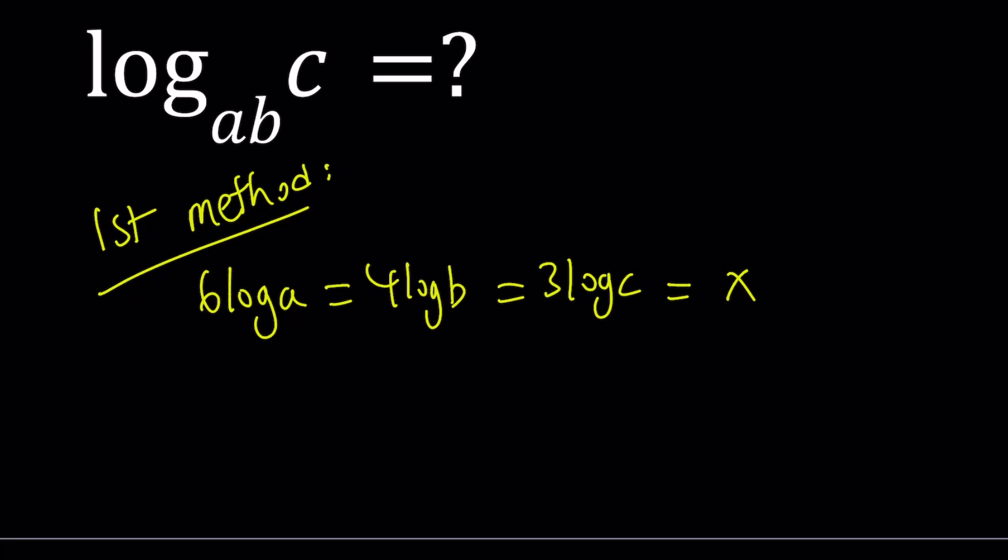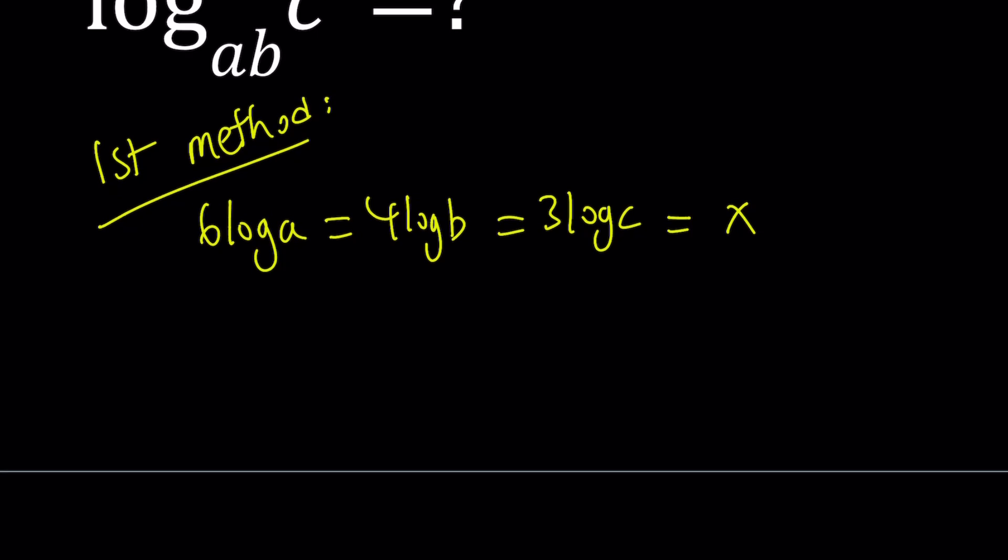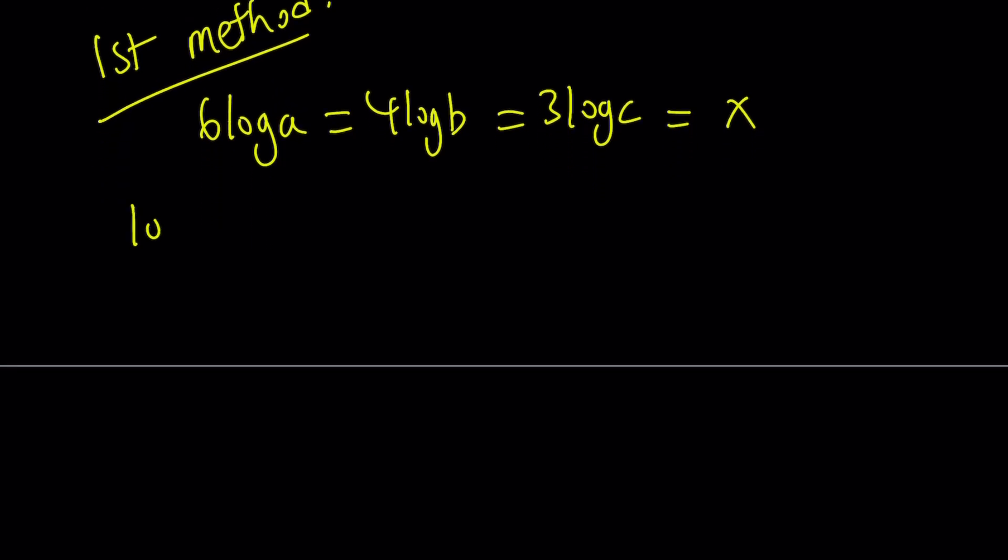So let's set these equal to X. Now from here, by setting everything equal to X, we can isolate log A, log B, and log C separately. So log A is going to be X over 6, log B is going to be X over 4, and log C is going to be X over 3. Great. So I got everything in terms of X.